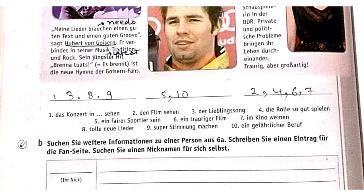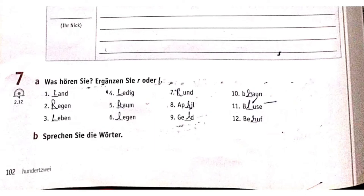After that, question 7 is a listening skill question. When you fill it in, you can also practice reading. First is 'land,' second is 'raygun,' third is 'laban,' fourth is 'ladish,' fifth is 'raun,' sixth is 'raygun,' seventh is 'ruined,' eighth is 'April,' ninth is 'brown,' tenth is 'elf bluzer,' eleventh is 'swolf,' and twelfth is 'beruf.'